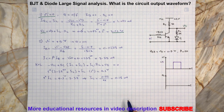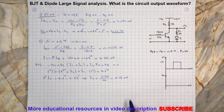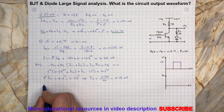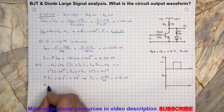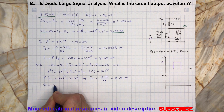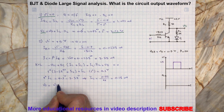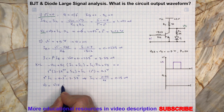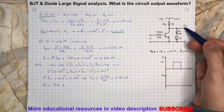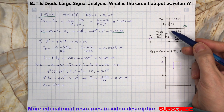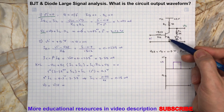Now, since we have determined the current flowing through resistor RL and we know the collector current, we can easily find the output voltage due to input voltage by writing a KVL. VO is the same as the voltage from collector to emitter in this case.